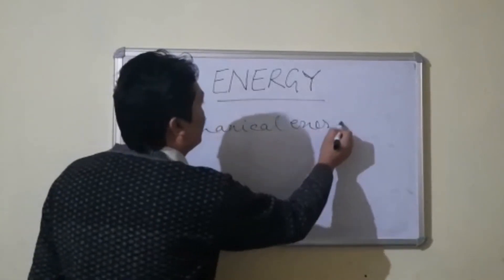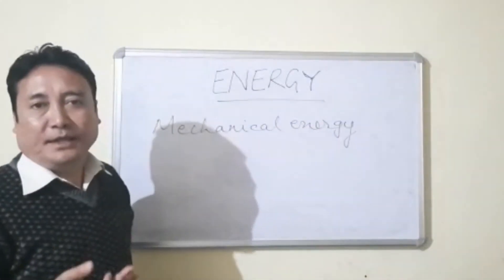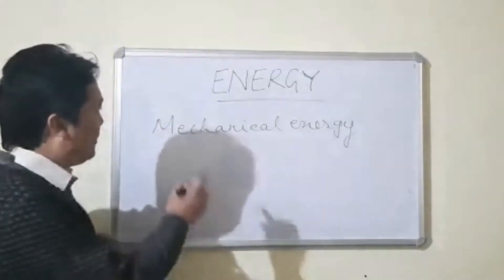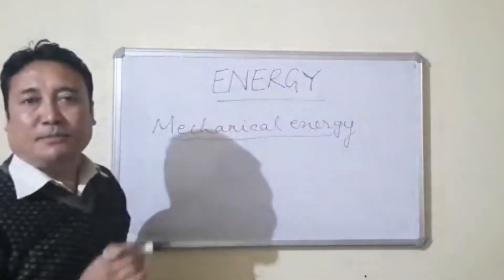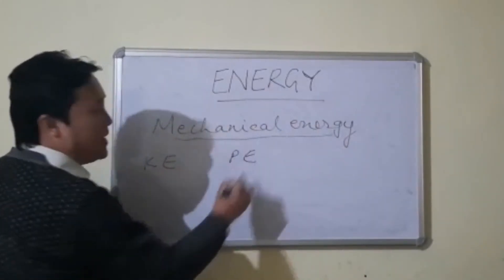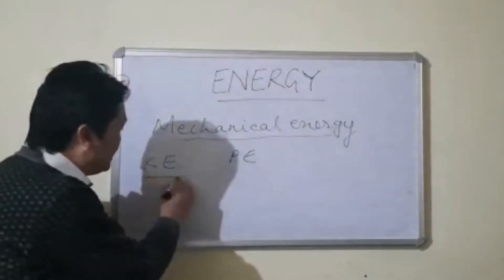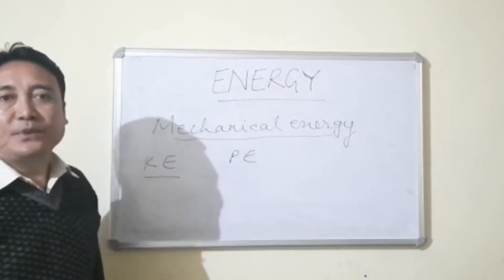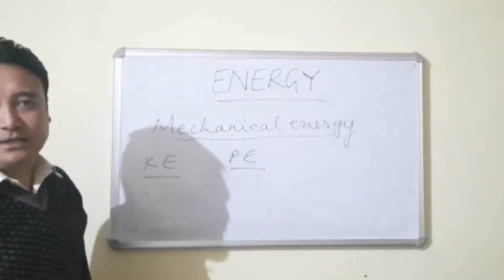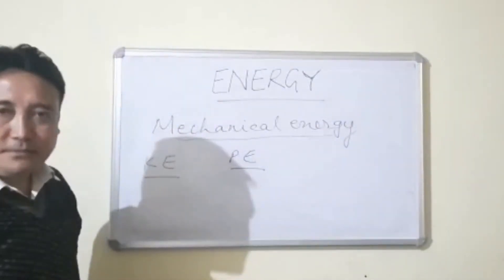Mechanical energy is the energy possessed by a body when it is in a state of rest or in motion. That form of energy is called mechanical energy. Mechanical energy is of two forms: one is kinetic energy and the other is potential energy, abbreviated as KE and PE. Kinetic energy is the energy possessed by a body when it is in a state of motion. Potential energy is the energy possessed by a body when it is in a state of rest or when there is a change in its shape and size.